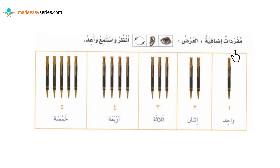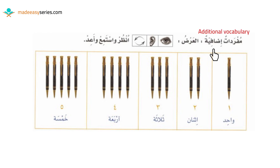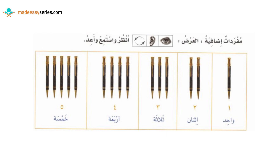Now let's move on to the next page. It says مفردات إضافية — additional vocabulary. It says انظر واستمعوا وأعيدوا — look, listen and repeat. Here we're going to be introduced to numbers in the Arabic language, from one to five. Numbers are very important as we need them every single day — to tell the age, the time, the date, when calling people, buying and selling, and even the speed of a car. So here we're going to start from one to five.